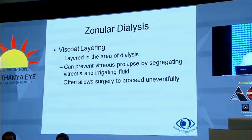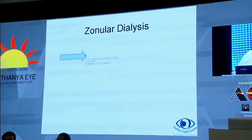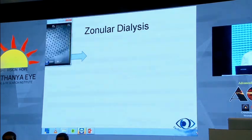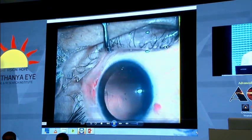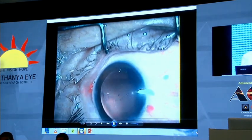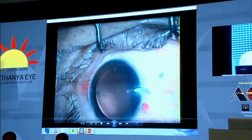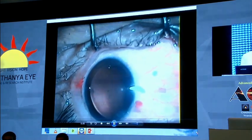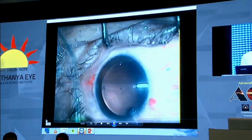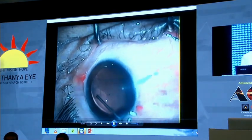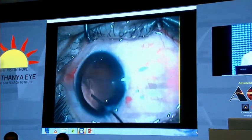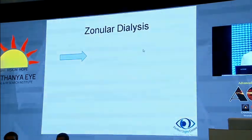In zonular dialysis, Viscoat layering can be done — you layer Viscoat in the area of the dialysis. This can prevent vitreous prolapse by segregating vitreous from irrigating fluids, and often allows surgery to proceed uneventfully. In a clinical video example: an area of dialysis was noticed at the end of the case — the capsule edge got pulled in by the irrigation-aspiration, creating a zonular dialysis. Viscoat was placed over the area to stabilize it, the surgery proceeded, the case was completed, and a CTR ring was also inserted.